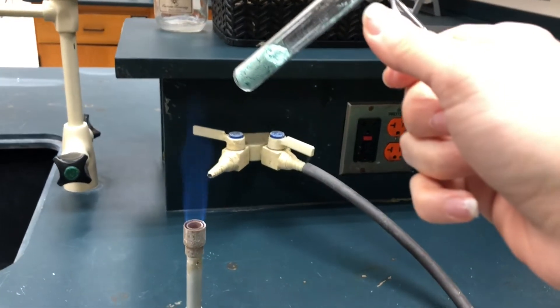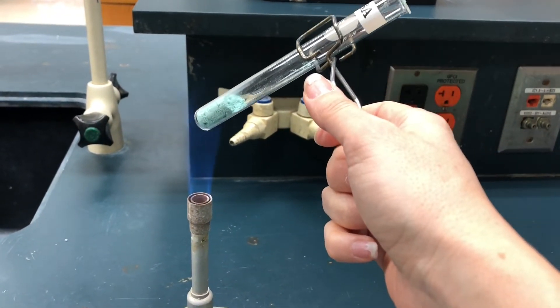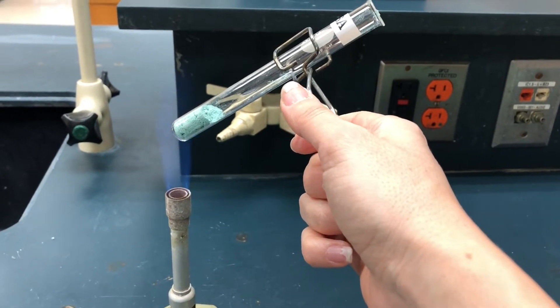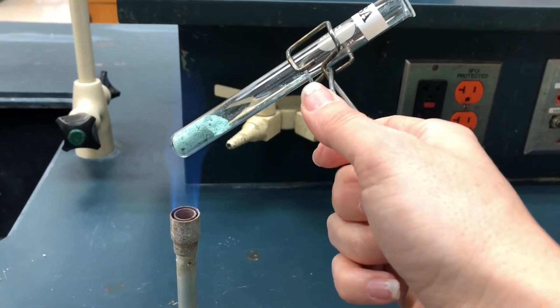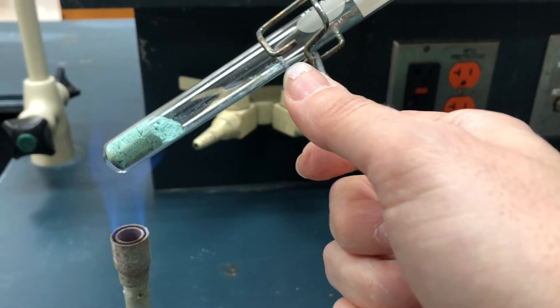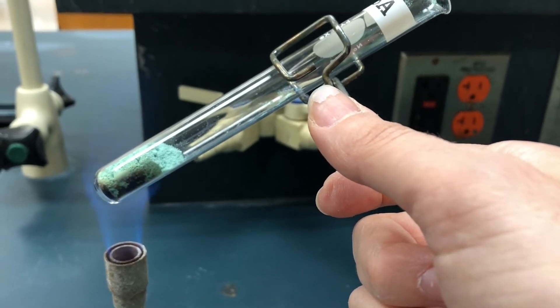Here's my Bunsen burner and I'm going to heat it up in the hottest part of the flame, which is this inner center cone. Notice I'm going to point it away from anybody who is near me and heat it up and make some observations. You can already see there at the bottom we're starting to see some change.